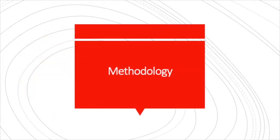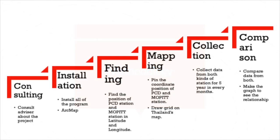For the methodology of this project, there are six steps. We start by consulting our advisor about the scope of work. After that, we install all necessary programs: ArcMap, for locating PCD stations and drawing MOPITT grid lines, and HDFView, for converting data from NASA files to Excel files. Then we find the positions of all PCD stations in Thailand and pin them on the map in ArcMap. Next, we draw the MOPITT grid lines on ArcMap. Finally, we collect data from MOPITT and PCD stations, and analyze them on Excel using graphs.